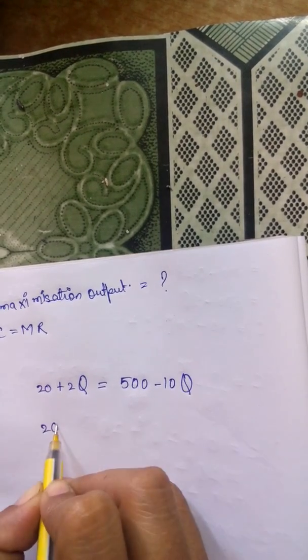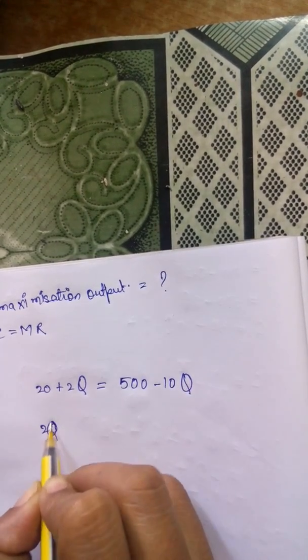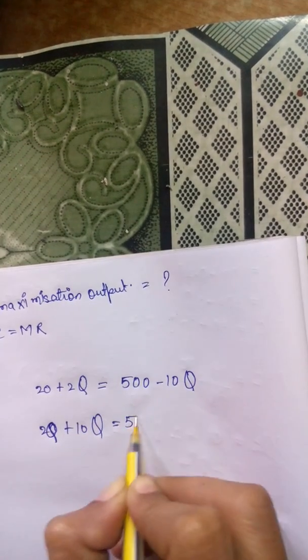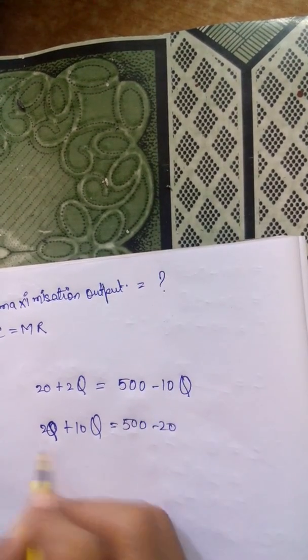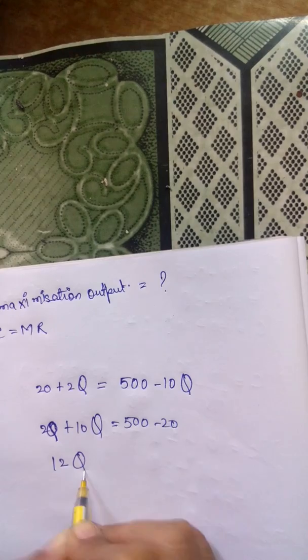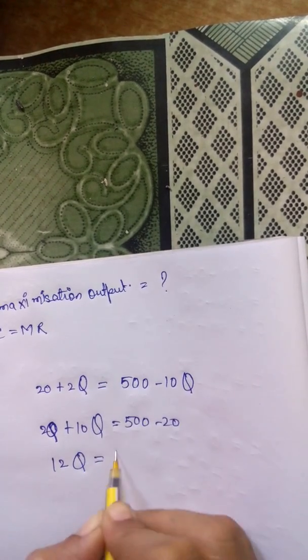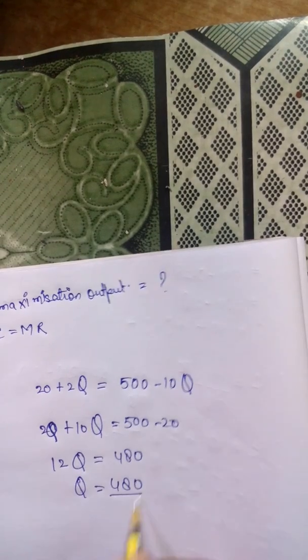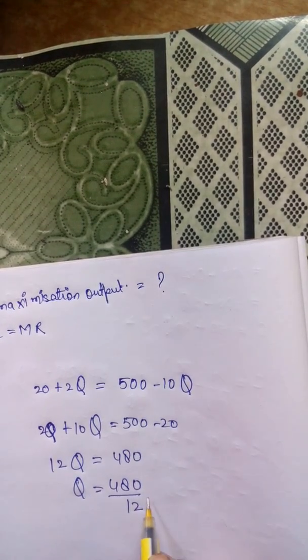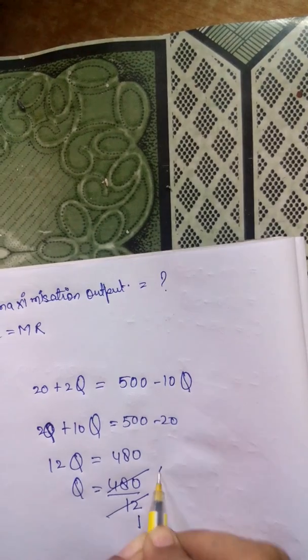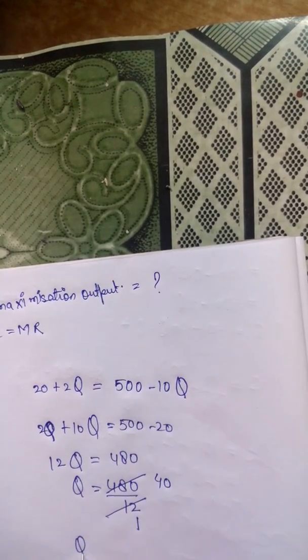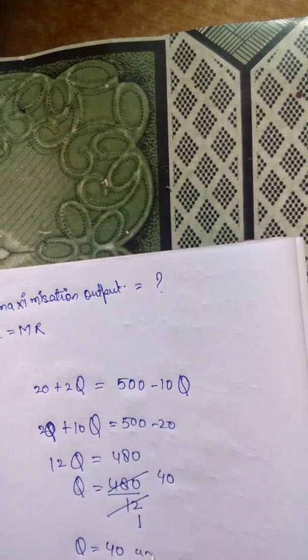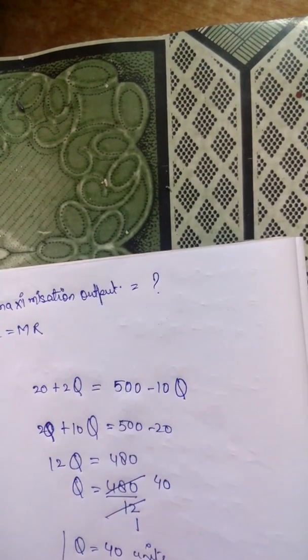Now 2Q plus 10Q equals 500 minus 20. This becomes 12Q equals 480. Q will be 480 divided by 12. Q equals 40.